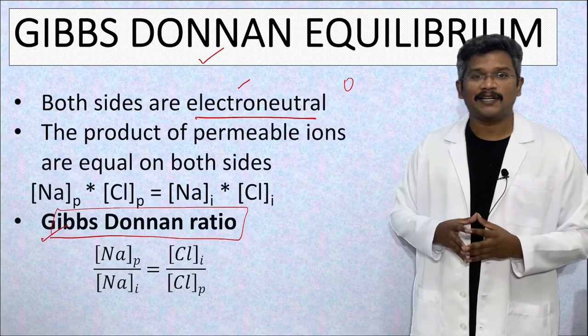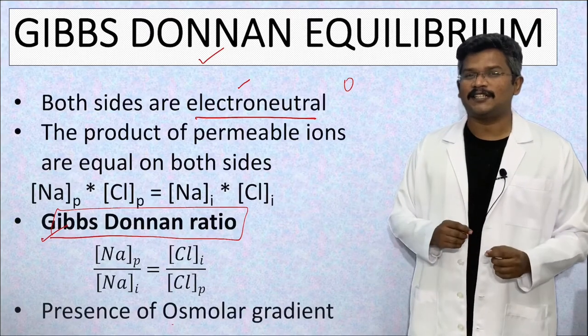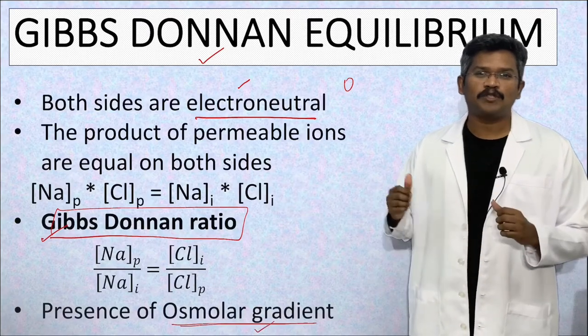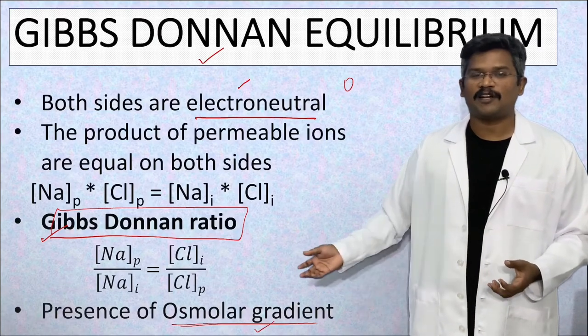At equilibrium, there will be greater number of ions in the side with impermeant ions. This will result in an osmotic gradient. This Gibbs-Donnan equilibrium is not a true equilibrium because of the presence of osmolar gradient.